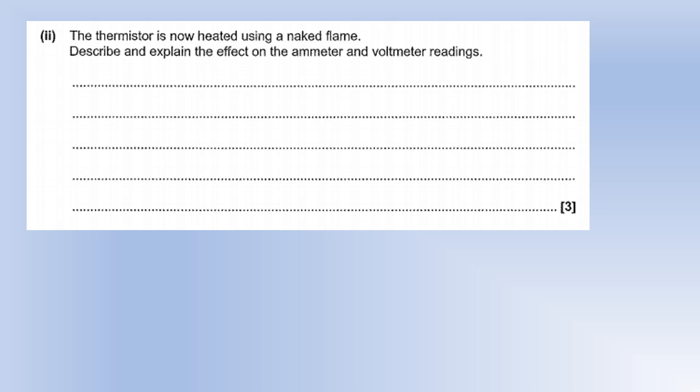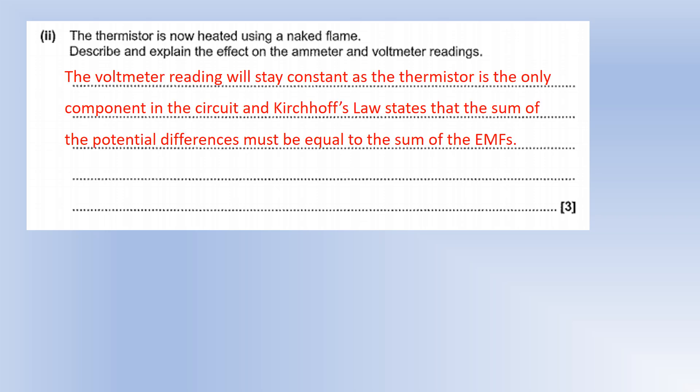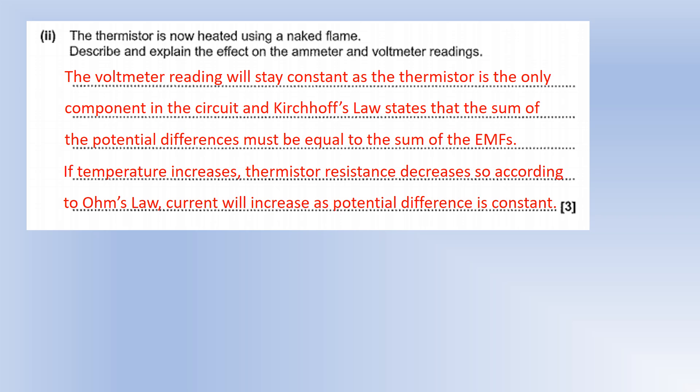The thermistor is now heated with a naked flame. The voltmeter reading won't change — it's the only component, so by Kirchhoff's voltage law the potential difference across it must equal the EMF. As temperature increases, thermistor resistance decreases, so with fixed EMF the current increases, meaning the ammeter reading increases.